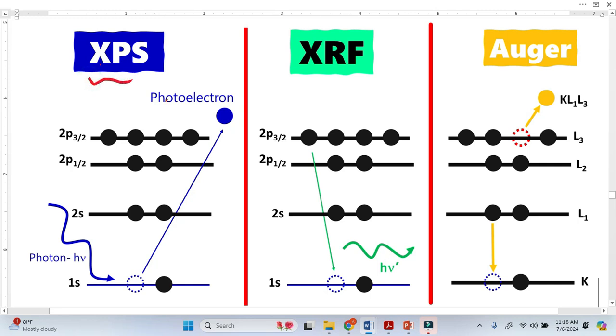In XPS measurement, three phenomena occur. The first one is the ejection of photoelectrons, and this is basically called X-ray photoelectron spectroscopy.